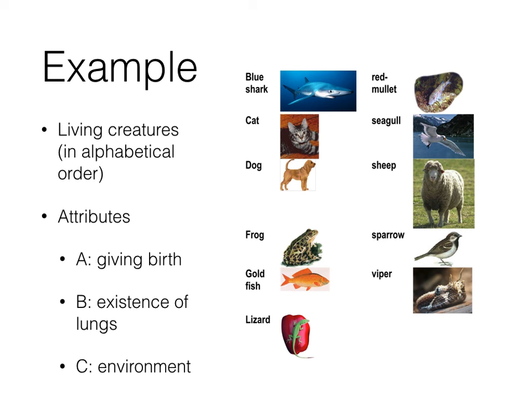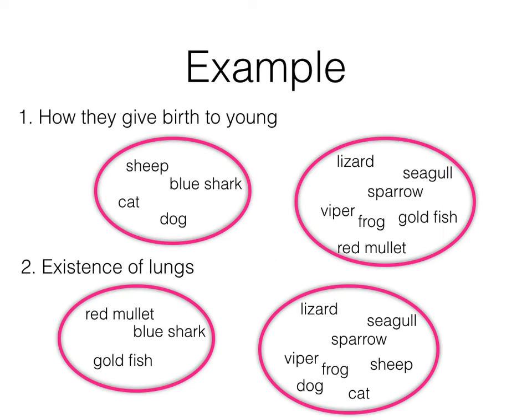The first attribute is how the animal gives birth — either by live birth or by an egg. We have existence of lungs as a binary attribute, and the environment they live in: water, land, or amphibious. If we cluster just by how animals give birth (attribute A), we get two clusters: the sheep, shark, dog, and cat give live birth, while the lizard, seagull, sparrow, and the rest hatch from eggs.